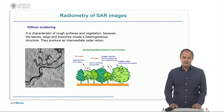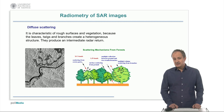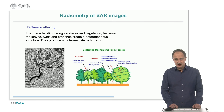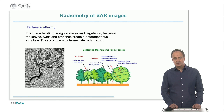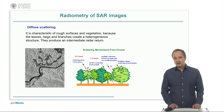Finally, diffuse scattering is characteristic of rough surfaces and vegetation, because the leaves, twigs, and branches create a heterogeneous structure where multiple volume scattering is produced, generating an intermediate or high radar return.